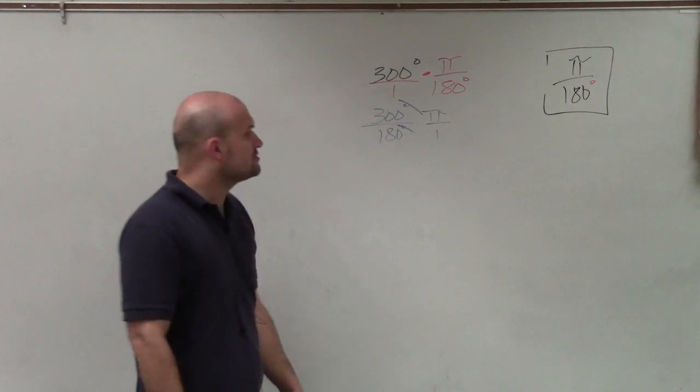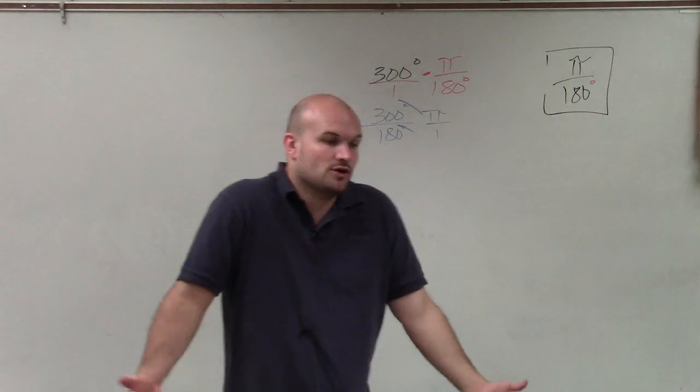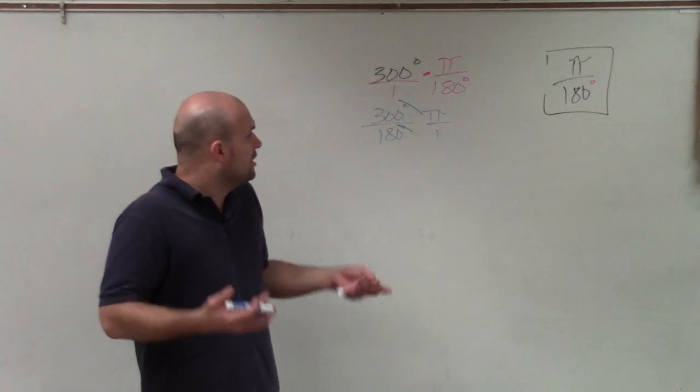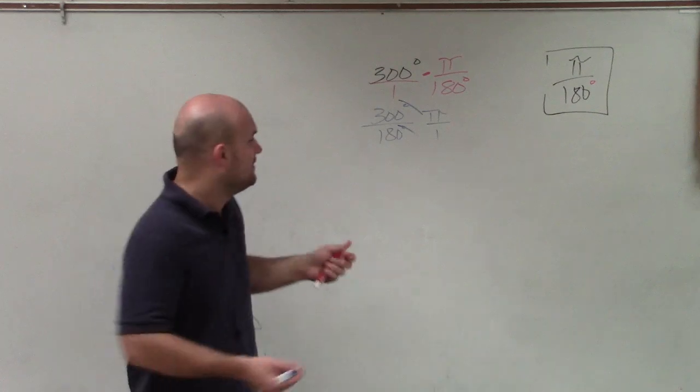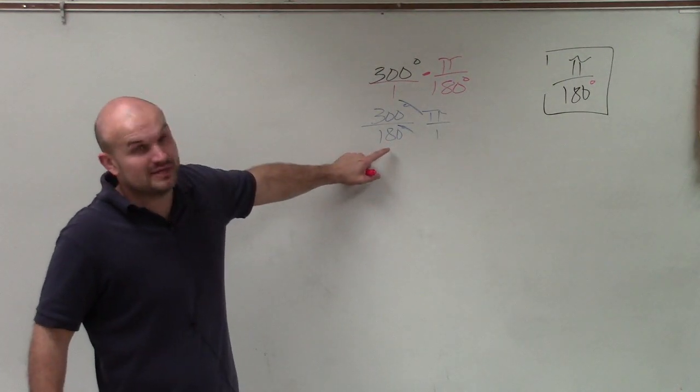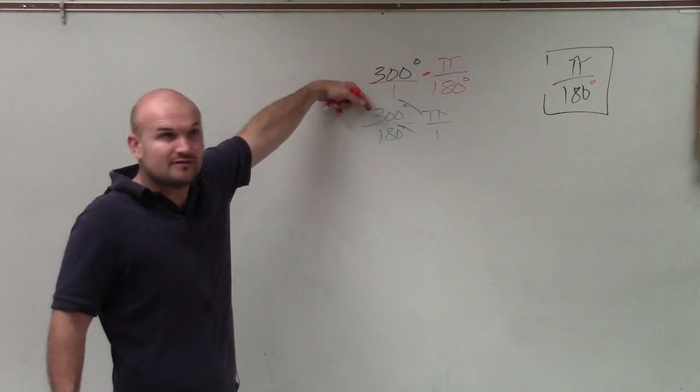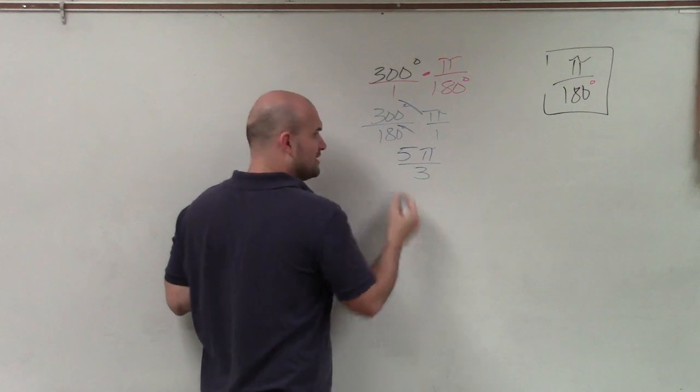Now I need to reduce 300 divided by 180. What is the largest number that divides into both 300 and 180? The largest number I can think of is 60, because 60 goes into 180 three times and 60 goes into 300 five times. So therefore, I can reduce that to 5 times pi over 3.